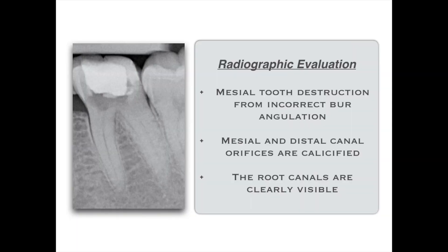What you see here is the patient's x-ray. This patient was referred to me to complete the root canal treatment, and it was clearly visible in the x-ray that the previous dentist had made an attempt to initiate root canal treatment but unfortunately couldn't find the canals. The first thing we need to do is radiographic evaluation — it's very important you read the x-ray before you attempt treatment. What I see first is mesial tooth destruction, probably from incorrect angulation of the burr when the previous dentist attempted the root canal.